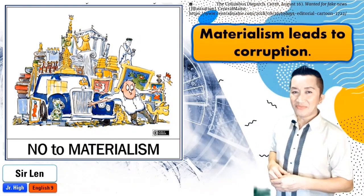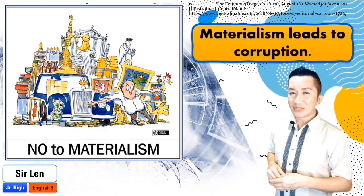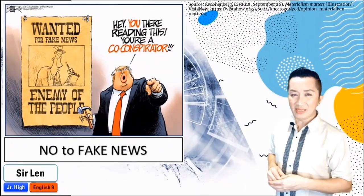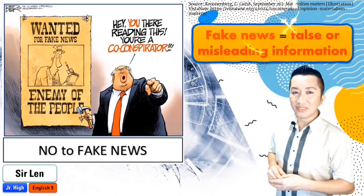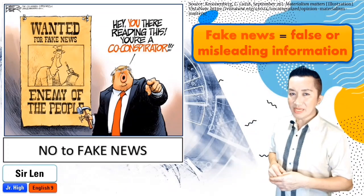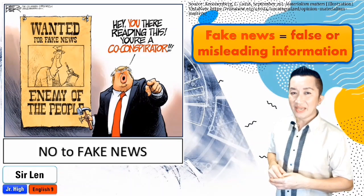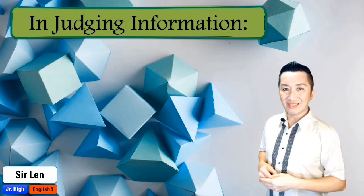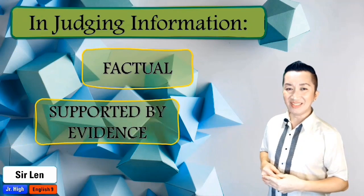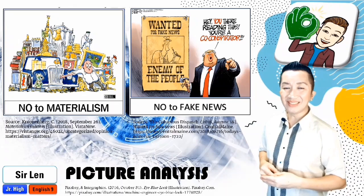Looking back at the first editorial cartoon, if you are against materialism, it might be because materialism leads to corruption, not only physically but also mentally and socially. Materialism can lead to depression and anxiety, leading to social and self-destruction. If you are against fake news, it might be because fake news literally means false or misleading information. Fake news can damage the reputation of a person, a family, or an organization. We must be very critical in judging information — it must be factual and supported by evidence.